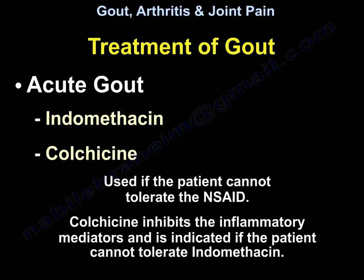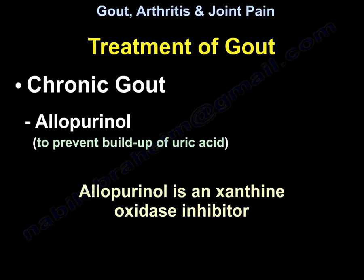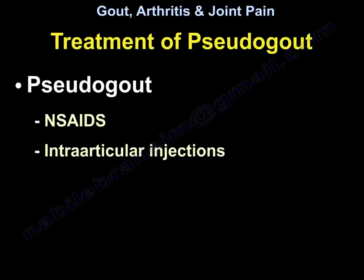The treatment of acute gout is indomethacin, or colchicine if the patient cannot tolerate non-steroidal anti-inflammatory drugs. Colchicine inhibits inflammatory mediators and is indicated when indomethacin is not tolerated. For chronic gout, allopurinol is used to prevent the buildup of uric acid — it is a xanthine oxidase inhibitor. The treatment of pseudogout includes non-steroidal anti-inflammatory medications and intra-articular injections, which may be helpful.